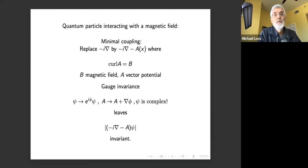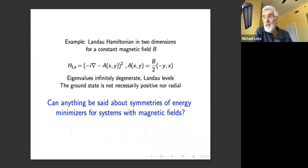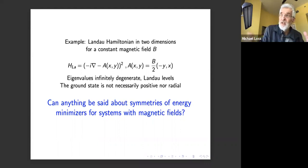Let me give examples of questions I'd like answered. The problem is complicated — we already see this in the Landau Hamiltonian in two dimensions with constant magnetic field. The eigenvalues are infinitely degenerate, called Landau levels, and the ground state is not necessarily positive, real, or radial, because of the infinite degeneracy.